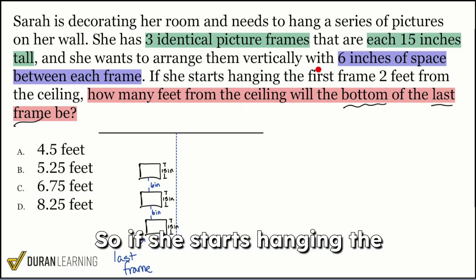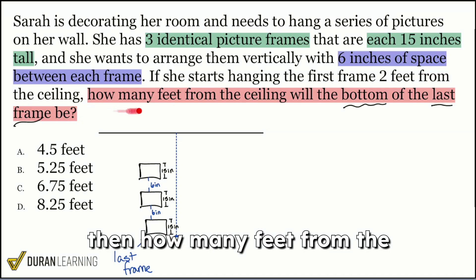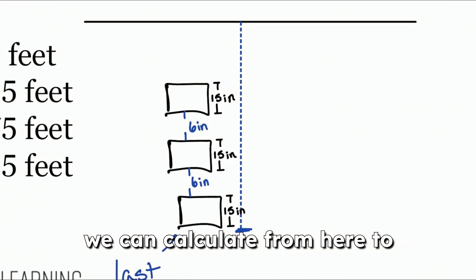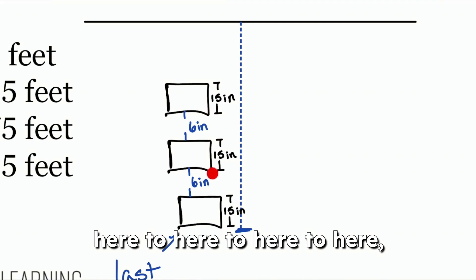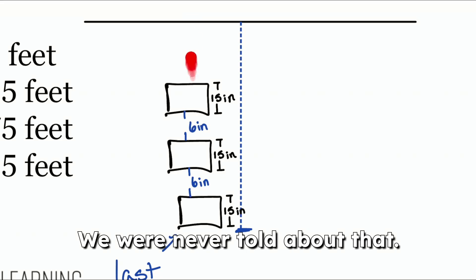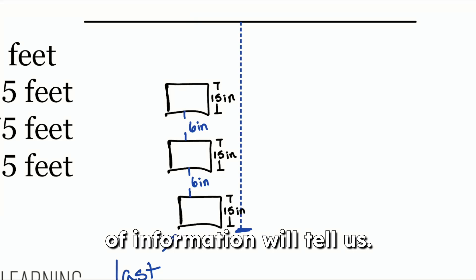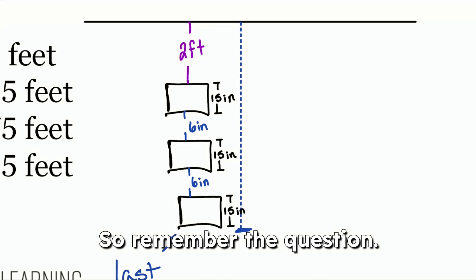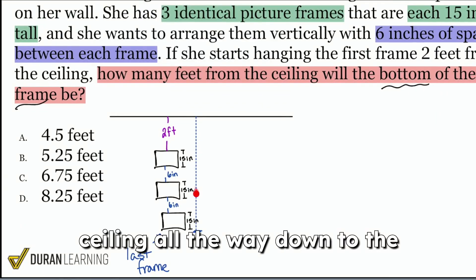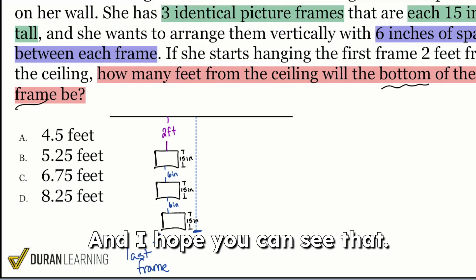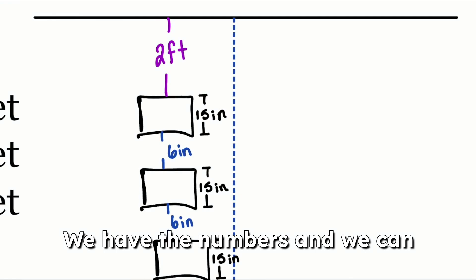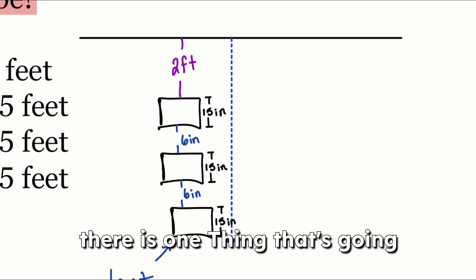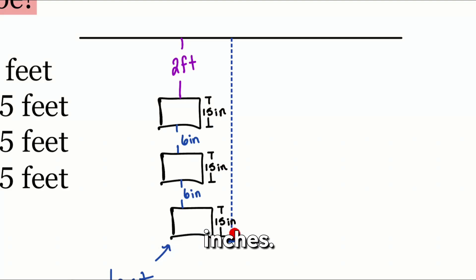If she starts hanging the first frame two feet from the ceiling, then how many feet from the ceiling will the bottom frame be? That information is very useful because we can calculate from the top of the first frame all the way down through the frames and gaps. But what about the distance from the ceiling to the top of the first frame? That's what this last piece of information tells us — it's going to be two feet from the ceiling to the top of that first frame. One thing to look out for before we calculate: we have inches, inches, inches everywhere, but then feet for that top gap.